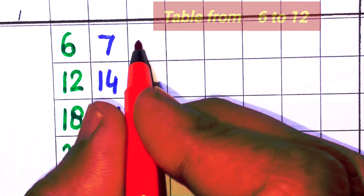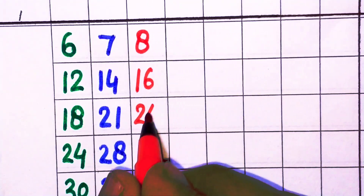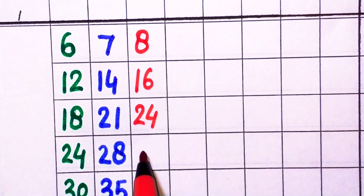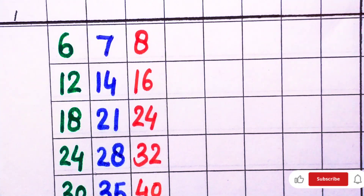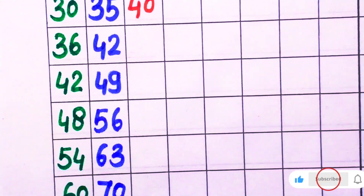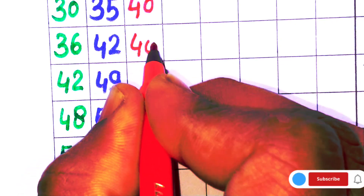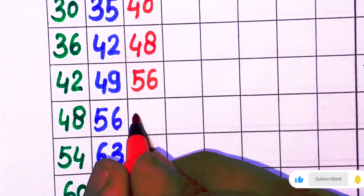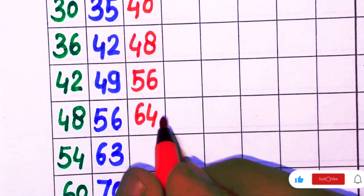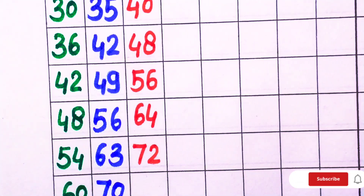8 × 1 = 8, 8 × 2 = 16, 8 × 3 = 24, 8 × 4 = 32, 8 × 5 = 40, 8 × 6 = 48, 8 × 7 = 56, 8 × 8 = 64, 8 × 9 = 72, 8 × 10 = 80.